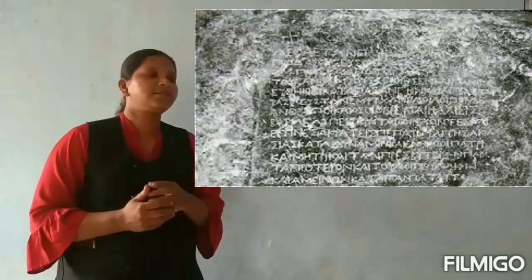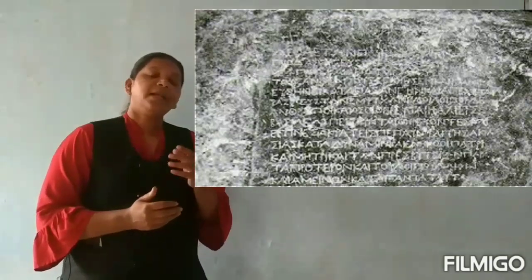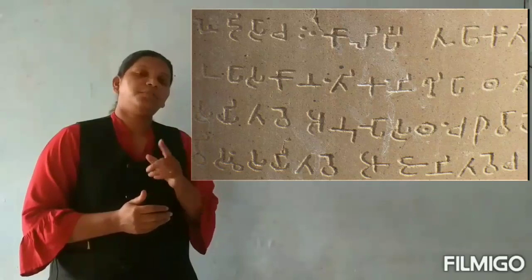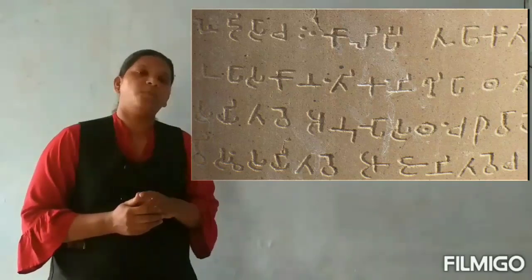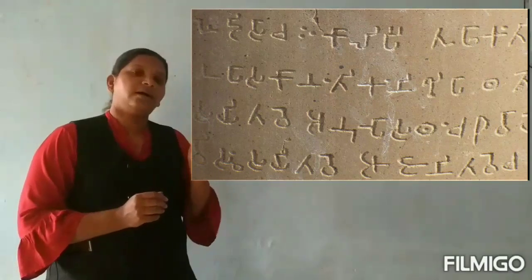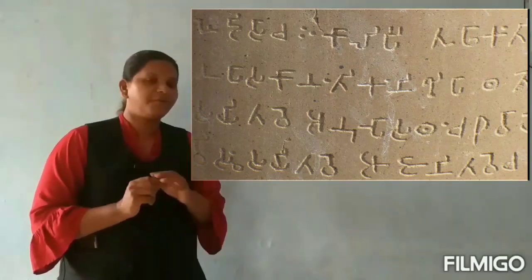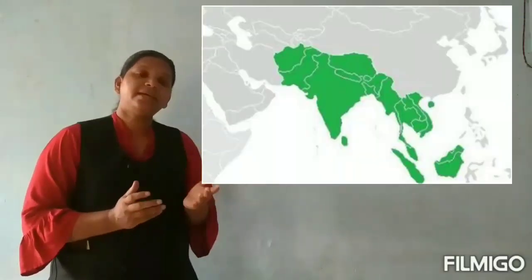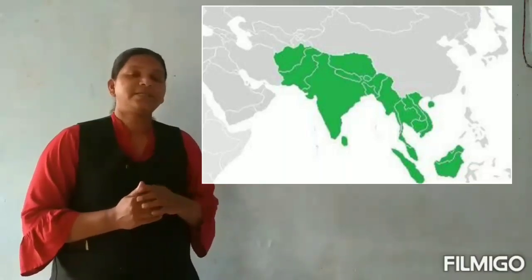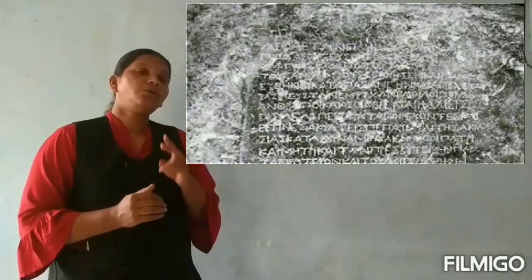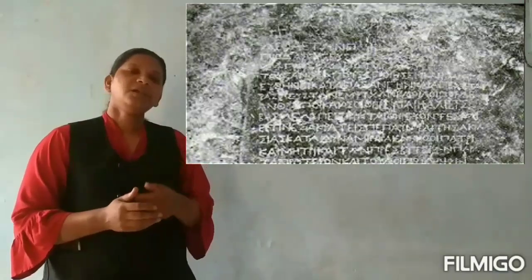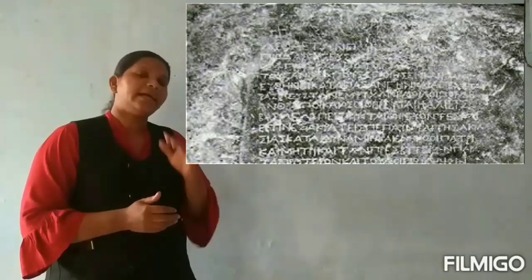The earliest inscription to be considered is that of Ashoka, found in Kandhar, which is present-day Afghanistan, from about 2250 years ago. As you know, the Mauryan emperors expanded their kingdom very vastly. This inscription was written in two different scripts and languages — Greek and Aramaic — which were in common use in that era.